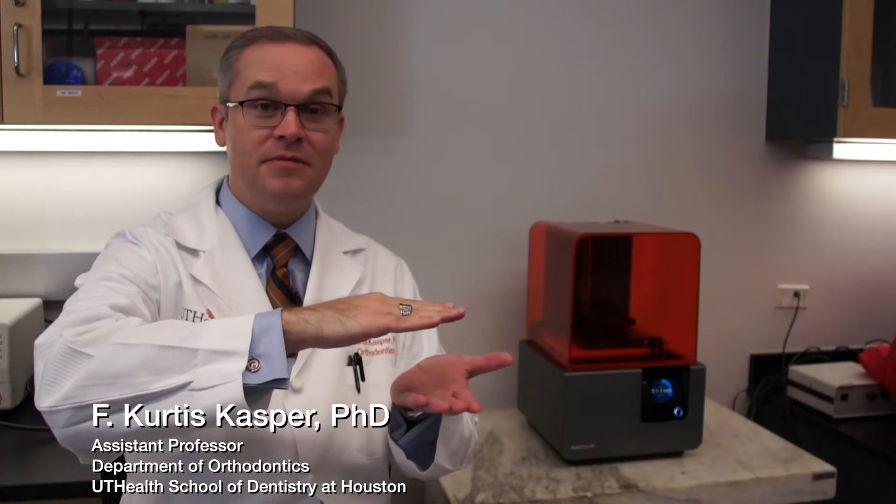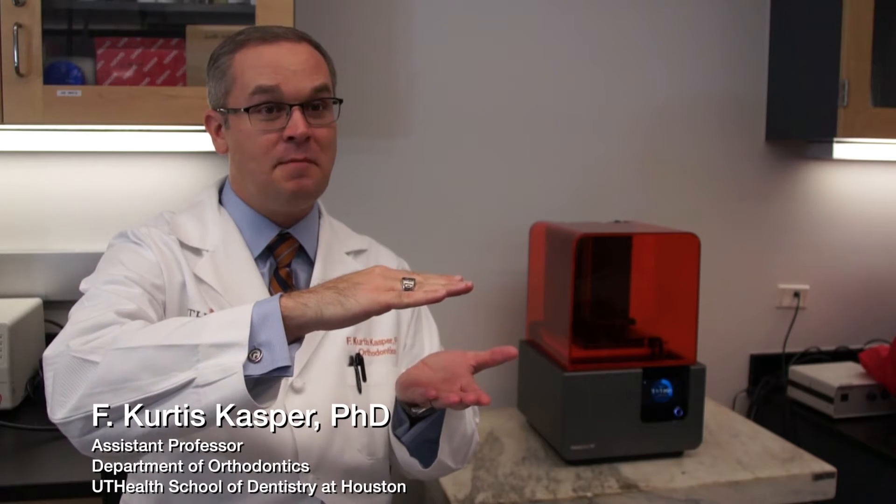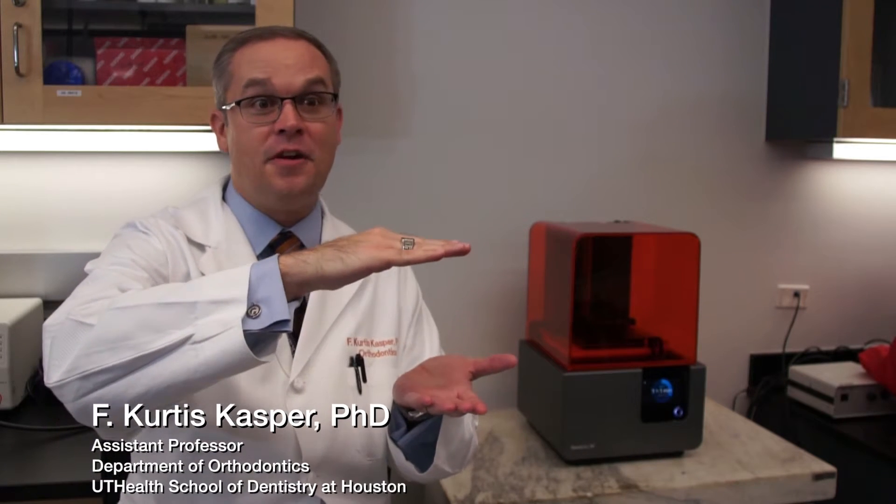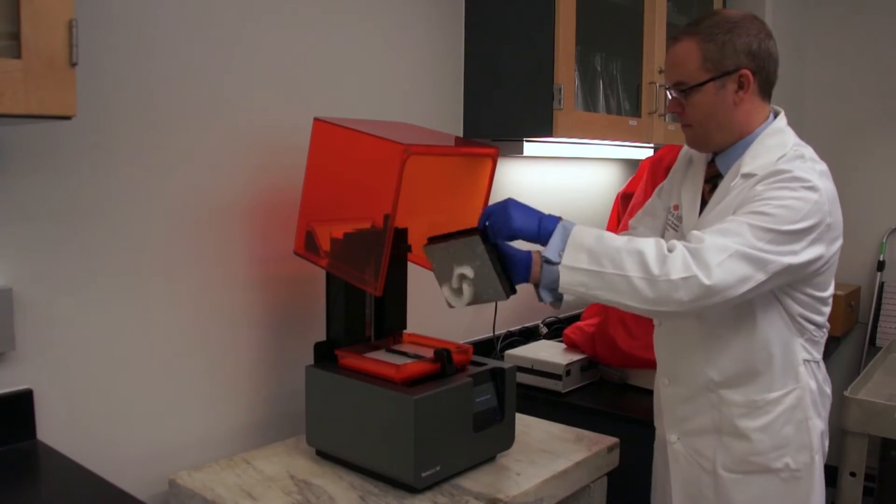The 3D printer works by taking a digital file of whatever part you want to print, and then it sections that file into different pieces. It prints each layer one at a time, but these layers glue together as the part is being printed. It prints in a vat of liquid plastic and pulls the part out as it's being printed layer by layer.